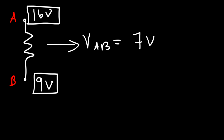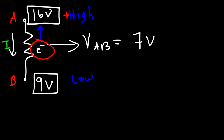In which direction will the current flow — from A to B, or B to A? A is at a higher potential than B. Conventional current always flows from high potential to low potential. Keep in mind that conventional current flows in the opposite direction compared to electron flow. Electrons flow toward the more positive (higher) potential because they're negatively charged. Conventional current flows from high to low potential, the same way water flows from the top of a mountain down to a valley.